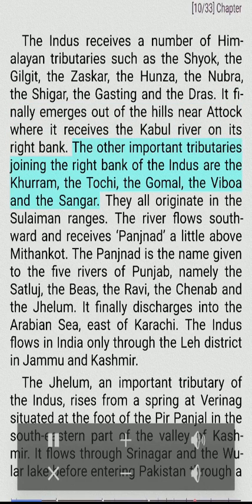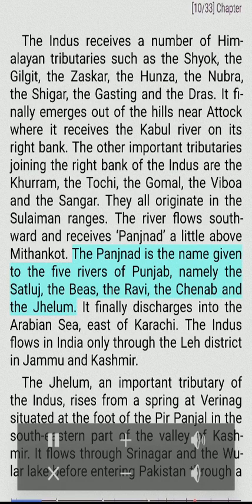Other important tributaries joining the right bank of the Indus are the Khurram, Tochi, Gomal, Viboa, and Sangar — all originating in the Sulaiman ranges. The river flows southward and receives the Panjnad a little above Mithankot. The Panjnad is the name given to the five rivers of Punjab: the Sutlej, the Beas, the Ravi, the Chenab, and the Jhelum. It finally discharges into the Arabian Sea east of Karachi. The Indus flows in India only through the Leh district in Jammu and Kashmir.